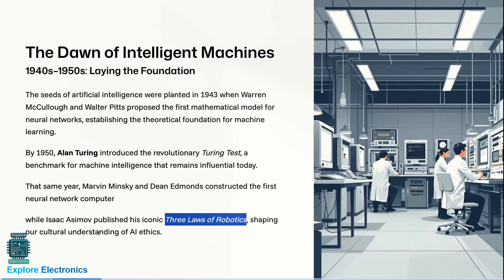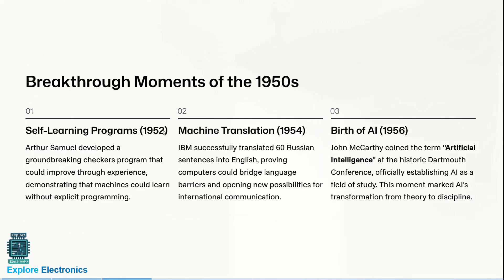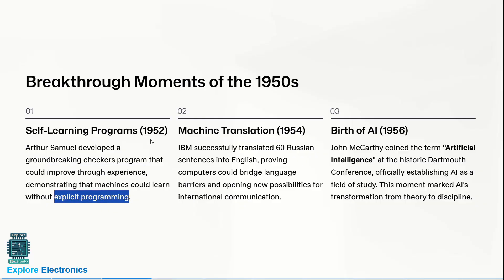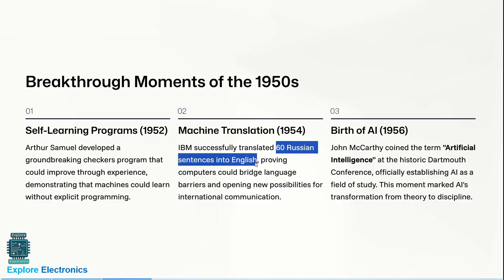shaping our cultural understanding of ethics. In 1952, Arthur Samuel developed a groundbreaking checkers program that could improve through experience, demonstrating that machines could learn without explicit programming. Then in 1954, IBM successfully translated 60 Russian sentences to English, proving computers could bridge language barriers and opening new possibilities for international communication.